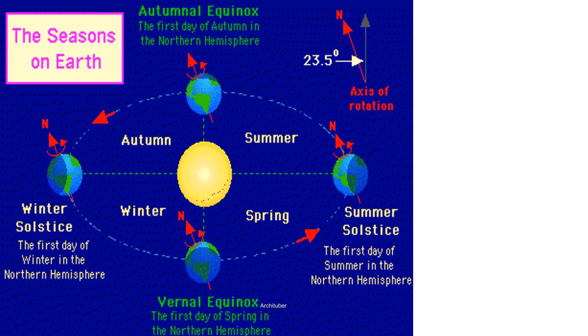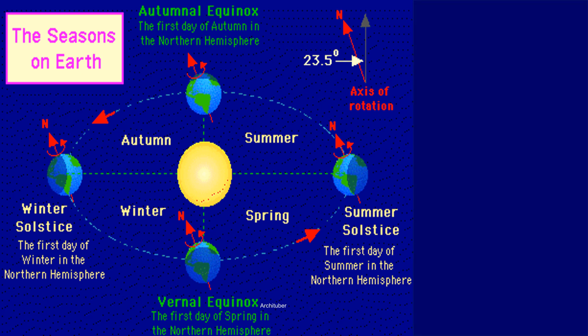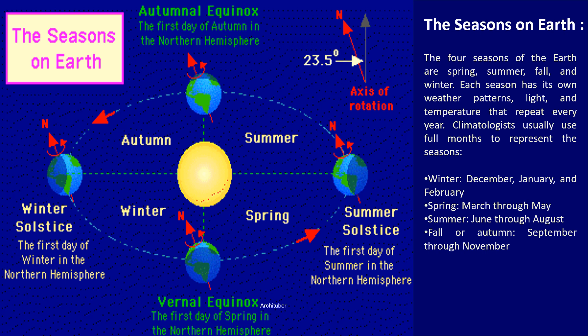Now coming on to the seasons. We have four seasons on the earth: autumn, summer, winter and spring. Each season has its own weather patterns, light and temperature that repeats every year, but the temperature, light and pattern may vary every year — that is climatic change. Climatologists usually use full months to represent the seasons. Winter comes in December, January and February; spring, March through May; summer lasts from June to August; and fall from September to November.